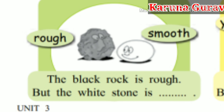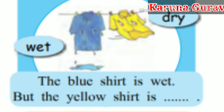Rough, Smooth. The black rock is rough, but the white stone is smooth. Wet, Dry. The blue shirt is wet, but the yellow shirt is dry.